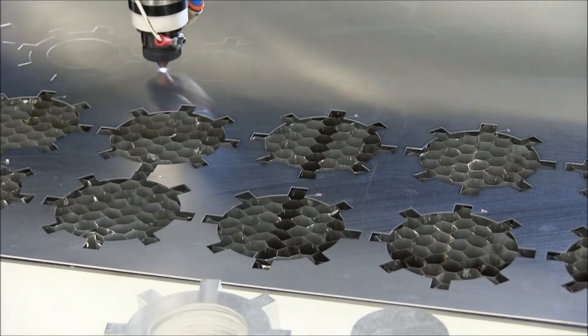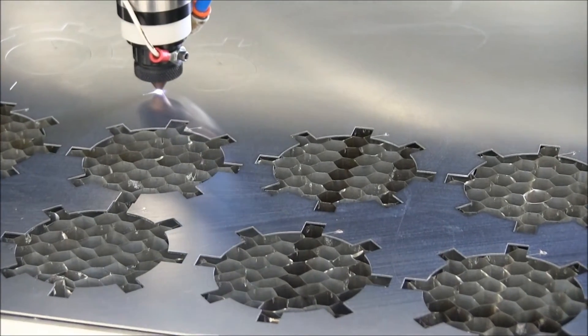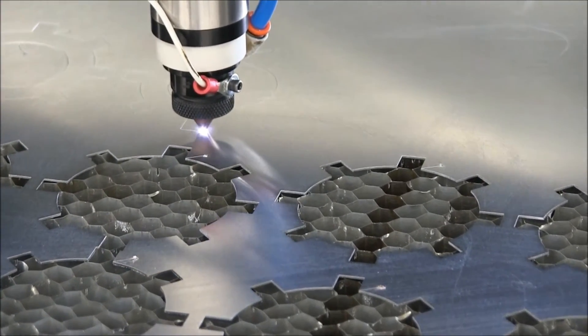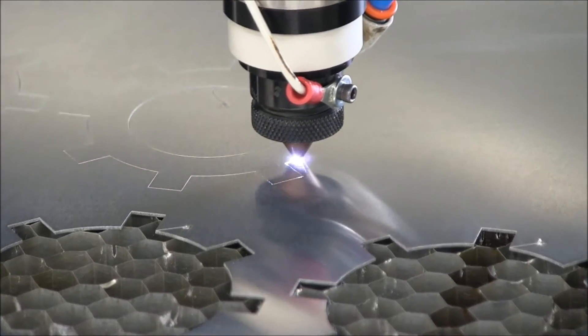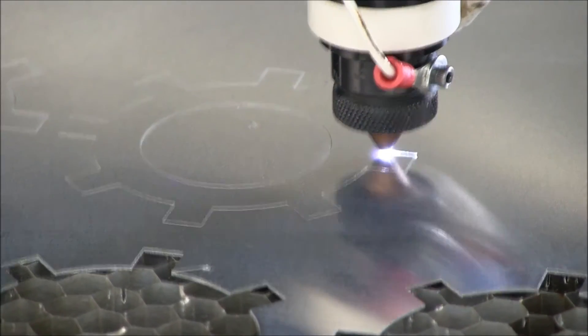As the cutting process begins, the height follower will track the surface of the metal and adjust the nozzle in the Z-axis, maintaining a constant focus point while the metal is being cut.